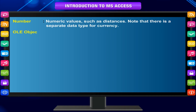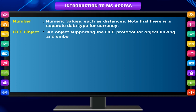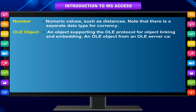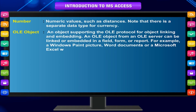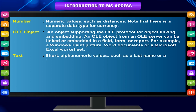OLE Object: an object supporting the OLE protocol for object linking and embedding. An OLE object from an OLE server can be linked or embedded in a field, form, or report — for example, a Windows Paint picture, Word documents, or a Microsoft Excel worksheet. Text: short alphanumeric values such as a last name or a street address. Yes/No: Boolean values.